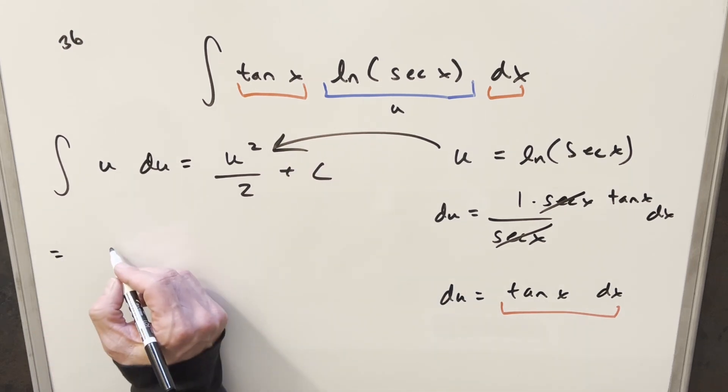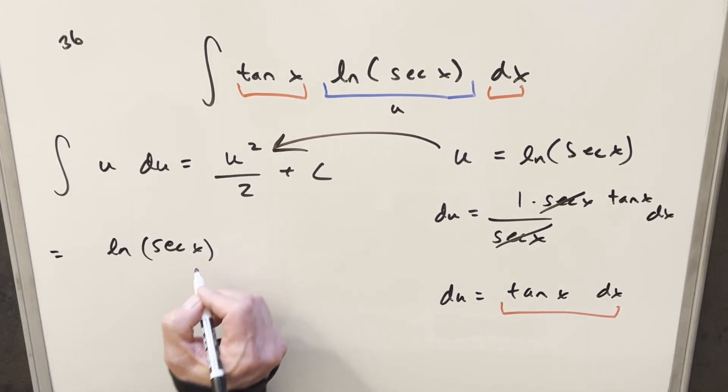So for my final solution, we're just going to have natural log secant x all squared over 2 plus c, and that's it.